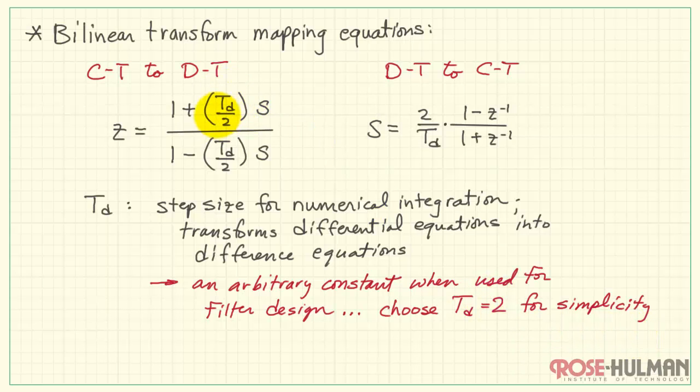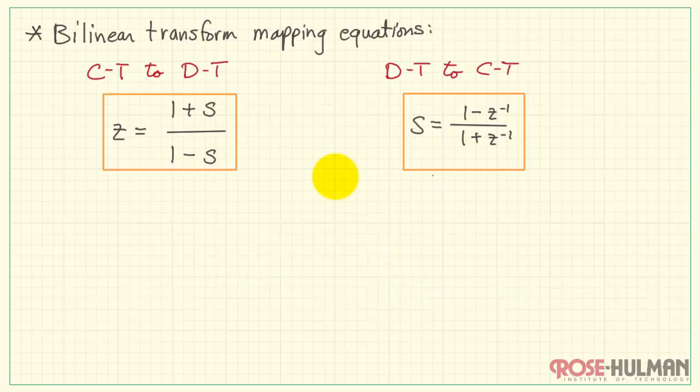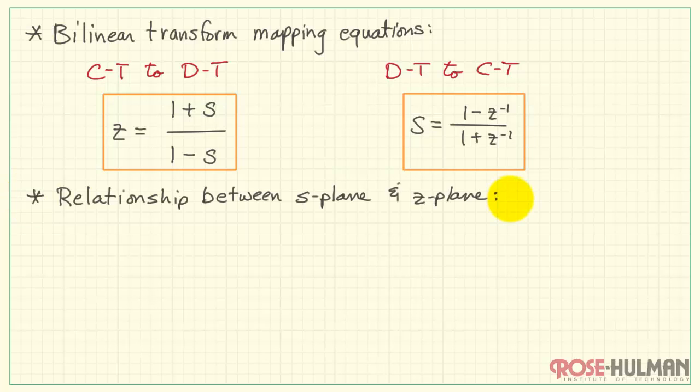That is, substituting 2 in here changes that to a 1. And in like fashion, it changes this to a 1 as well. Therefore, we can go with these simpler versions of the bilinear transform mapping equations.